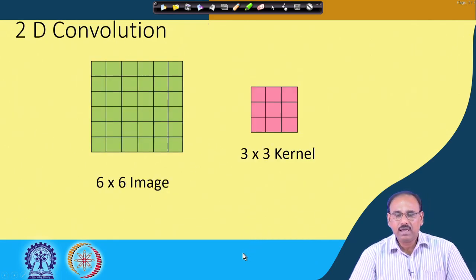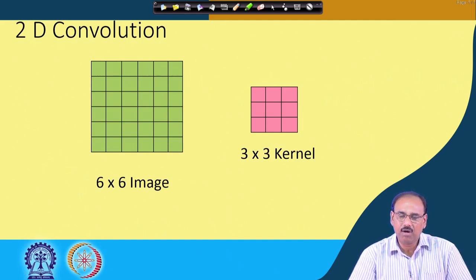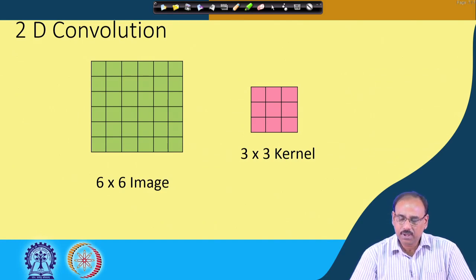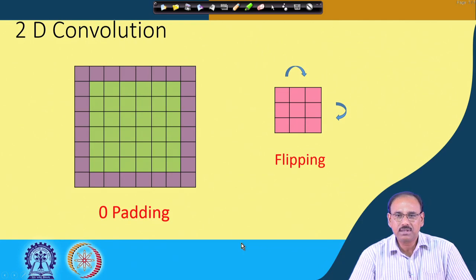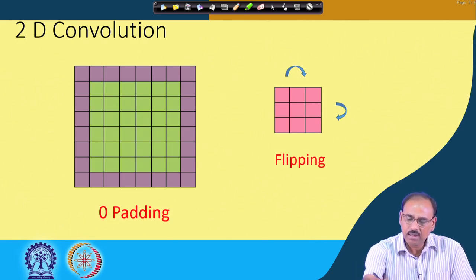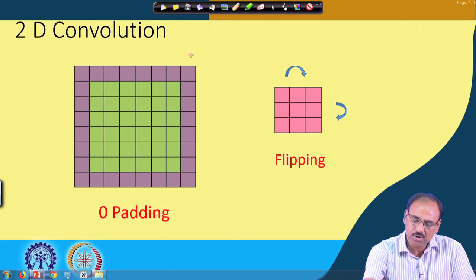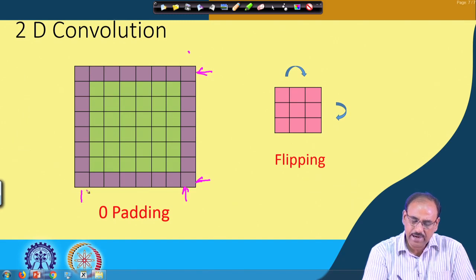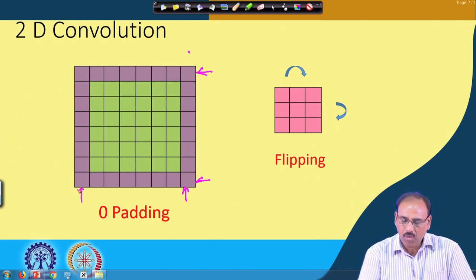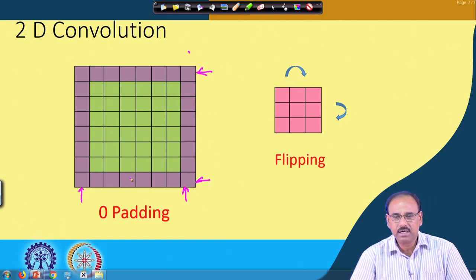In the case of two-dimensional images, assume an image of size 6×6 and a kernel of size 3×3. To perform the convolution, because the kernel is 3×3, we must pad with extra rows and columns whose element values are all 0. These additional rows and columns padded with zeros are what is known as zero padding.